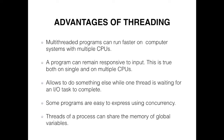Another advantage is that some programs are easier to express using concurrency, which leads to elegant solutions that are easier to maintain and debug — some processes are inherently concurrent in nature. Finally, threads of a process can share the memory of global variables. If a global variable is changed in one thread, that change is valid for all threads. A thread can also have its own local variables.